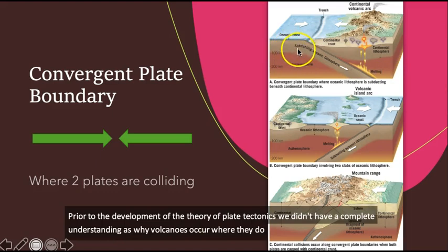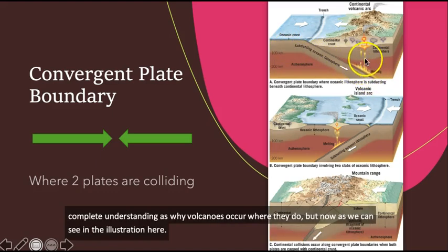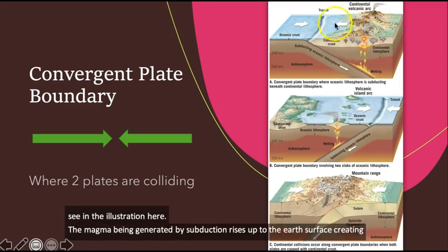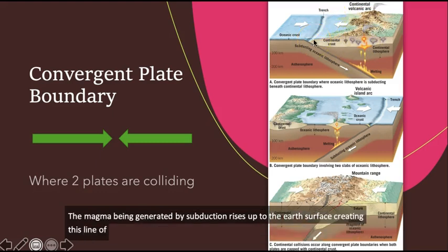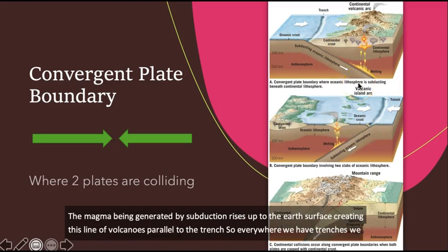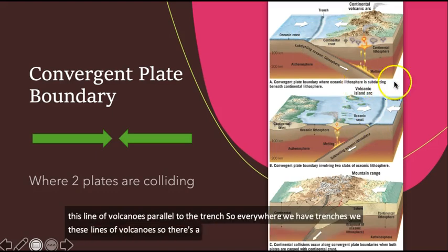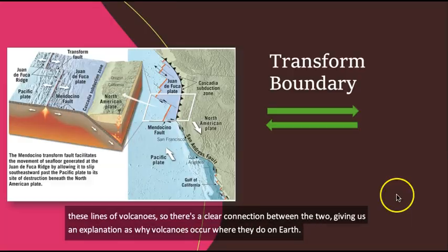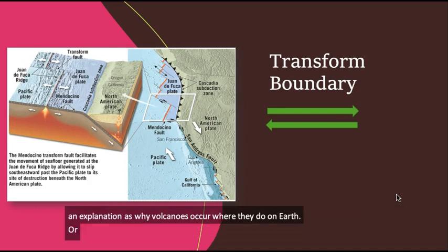But now, as we can see in the illustration here, the magma being generated by subduction rises up to the Earth's surface, creating this line of volcanoes parallel to the trench. So everywhere we have trenches, we have these lines of volcanoes. So there's a clear connection between the two, giving us an explanation as to why volcanoes occur where they do on Earth.